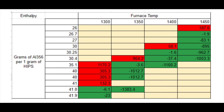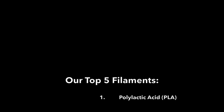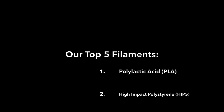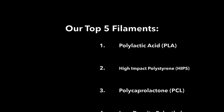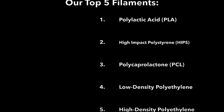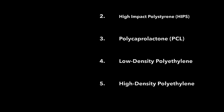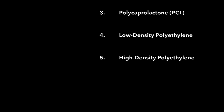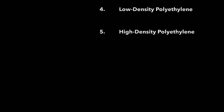Once we had this data, we were able to determine our top five filaments for 3D printing. Our top filaments include polylactic acid, high-impact polystyrene, polycaprolactone, low-density polyethylene, and high-density polyethylene.